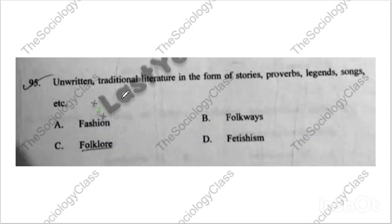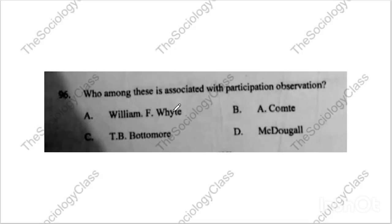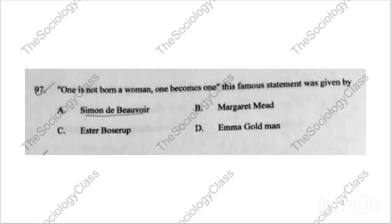Question number ninety-five: 'Unwritten traditional literature in the form of stories, proverbs, songs.' The correct answer is C — folklore. Question ninety-six: 'Who among the following is associated with participant observation?' The correct answer is A — W.F. Whyte. I have already given detailed coverage of this in previous videos.